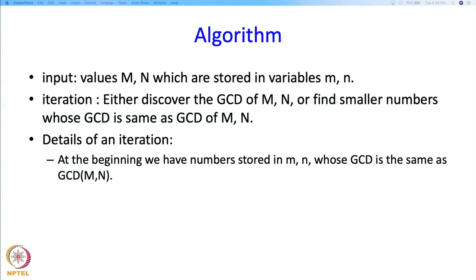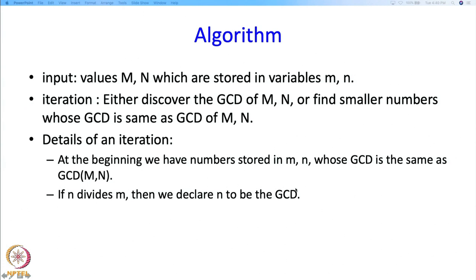So that is basically the idea of the iteration. So what are the details of the iteration? At the beginning we have the number stored in little m, little n, whose GCD is the same as the GCD of M and N. Well at the beginning we will store M, N in m and n. So this statement is vacuously true. But in each iteration we will try to maintain the statement. So if n divides m, we declare n to be the GCD. So that is by Euclid's theorem. But if it is not, then we know that GCD of m and n, or the GCD of little m and little n, which is equal to the GCD of M and N must be equal to the GCD of n and m mod n.